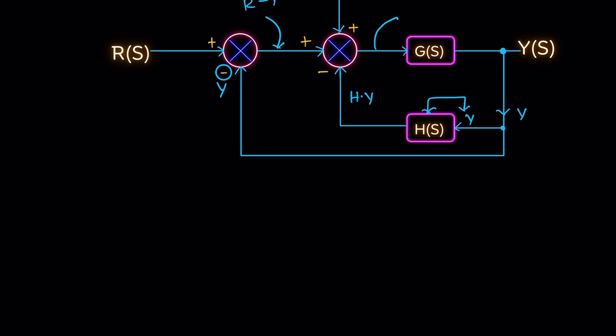And the next summing point, the output equals D is positive and this one is also positive, so R minus Y directly.